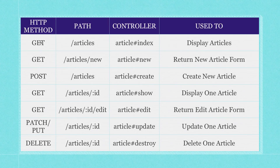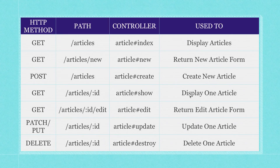Here are all the HTTP methods — GET, POST, PATCH, PUT, DELETE — and their matching URLs put in the browser. These are going to be generated on their own, and the matching controller methods are fired when specific URLs and HTTP methods are executed together. Index displays all articles. New creates a form to create a new article. Create creates a new article. Show displays one article by ID. Edit allows editing a specific article. Update updates an article. Delete deletes an article. That is everything you really need to understand.